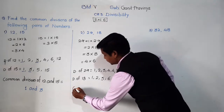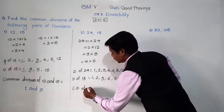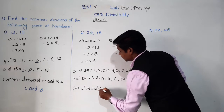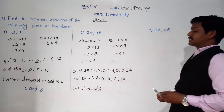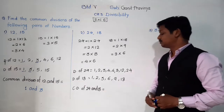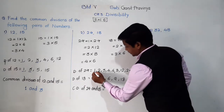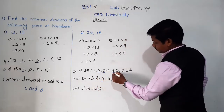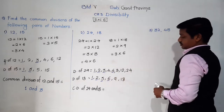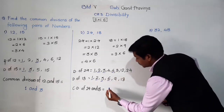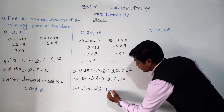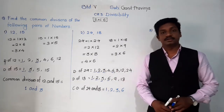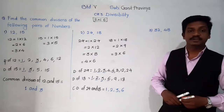Now, common divisors. CD means common divisors. Let's underline the common ones: 1, 2, 3, and 6 are common. So common divisors of 24 and 18 are 1, 2, 3, and 6 — that's 4 common divisors. In this way we have to find common divisors of the given numbers.